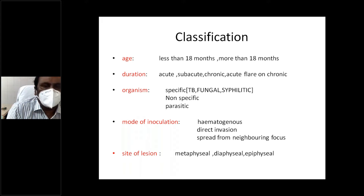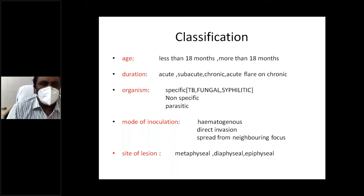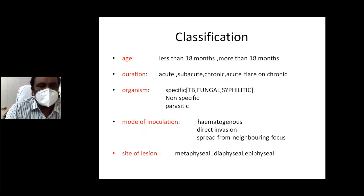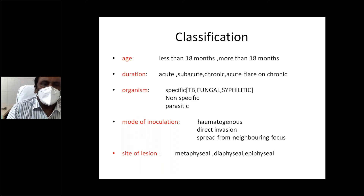To summarize: hematogenous spread is most commonly seen in children; direct inoculation is most commonly seen in adults; spread from neighboring focus equally affects both. The spine is the most common area for neighboring focus infection. Regarding site of lesion, metaphyseal location is the most common. The site also gives a clue about the organism and the age of the patient.